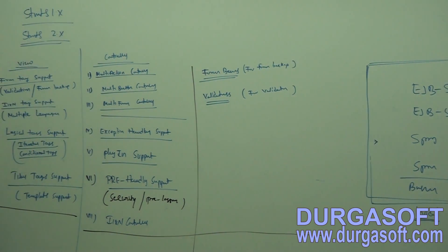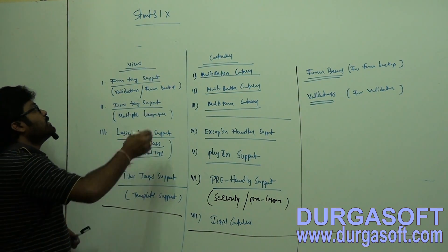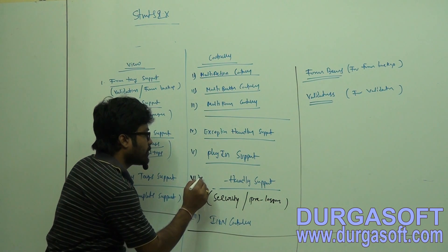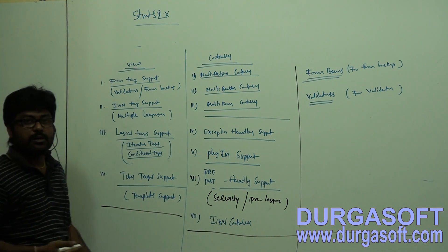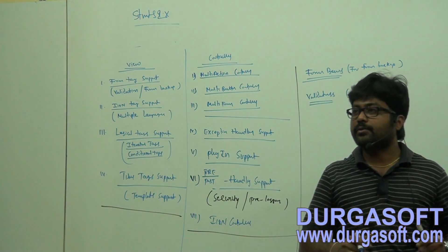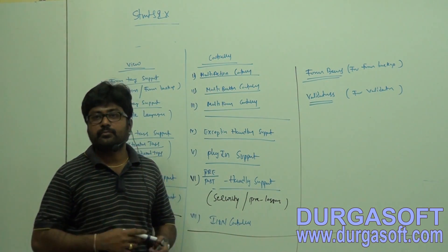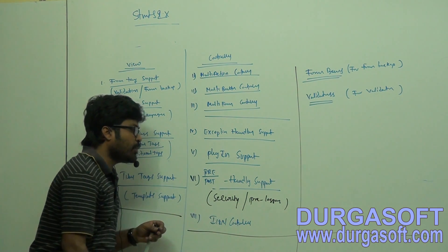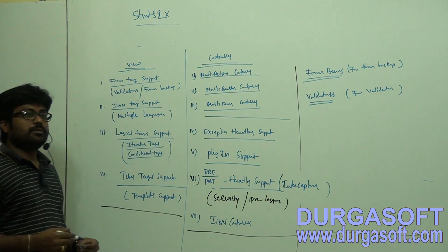For Struts 2x, all features from 1x are available, plus additional ones. Along with pre-handling support, Struts 2x also has post-handling support — through the interceptors concept. You can execute pre-operations and post-operations: security before submitting a request, and output page rendering operations after completion, all using interceptors.